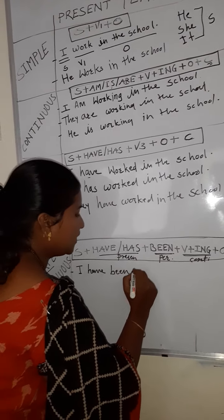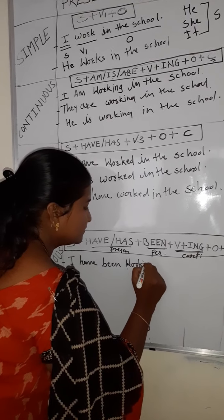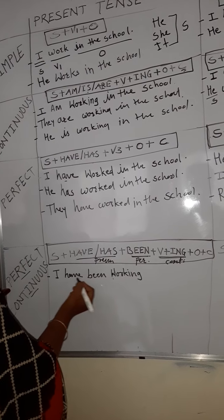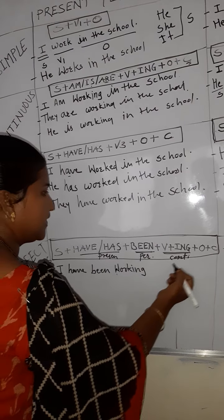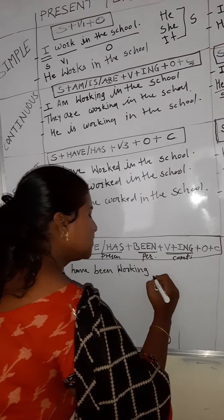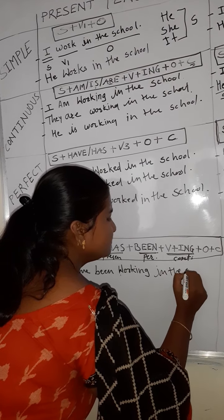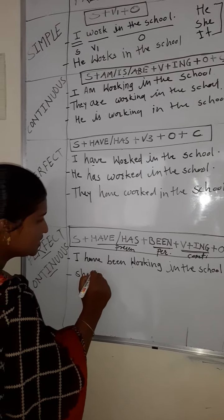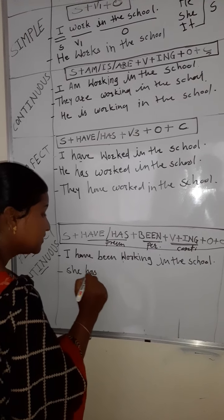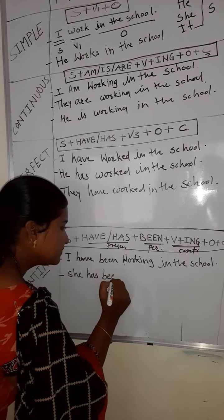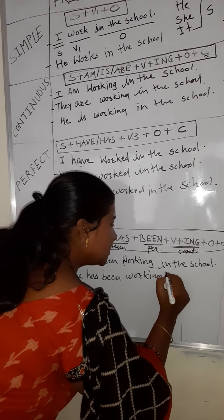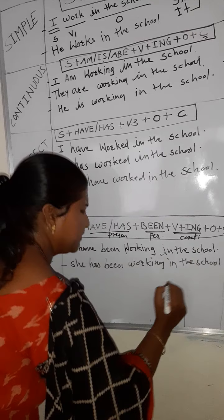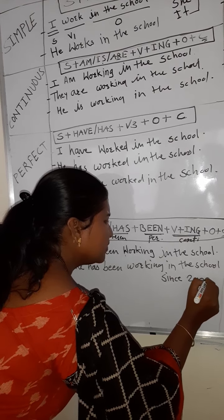So: 'I have been working.' Work plus ING = working. It is continuous, perfect, and present — present perfect continuous tense. Full sentence: 'I have been working in the school.' You can also add the complement. If the subject is 'she' — third person singular — use 'has': 'She has been working in the school since 2000.'